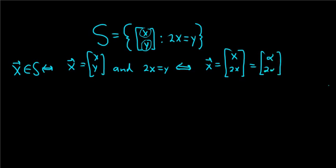So whenever we take a vector X in S, we can say it's of the form [alpha, 2alpha] or [beta, 2beta], right, for alpha a real number. All right, so let's prove this set is closed. So to prove it's closed, what we have to do is take any two vectors in this set and show the sum is in the set.